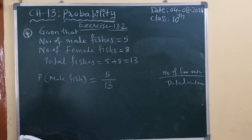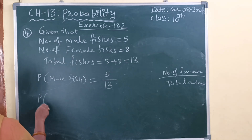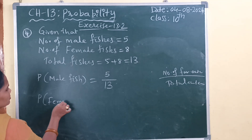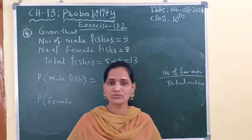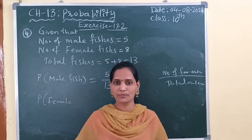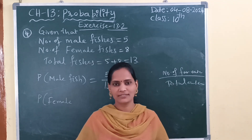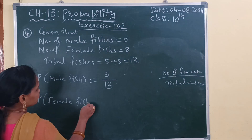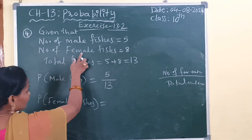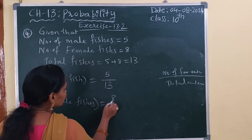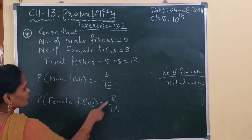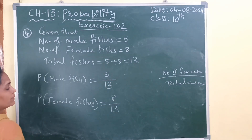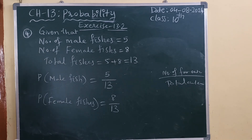This is only what they asked in the question. One more extra I will tell you — the probability of getting a female fish. The probability of getting a female fish is equal to favorable outcomes — number of female fish is 8 — divided by total outcomes 13. So 8 by 13 is the probability of getting a female fish.